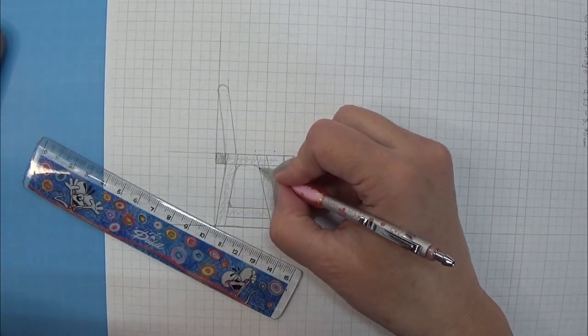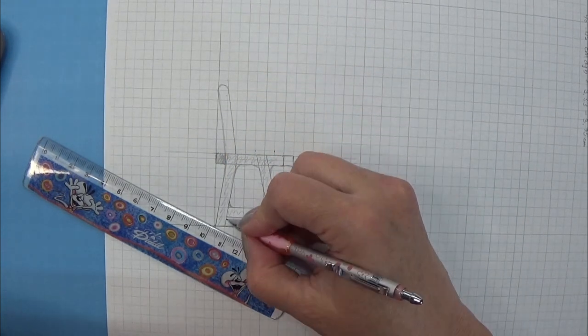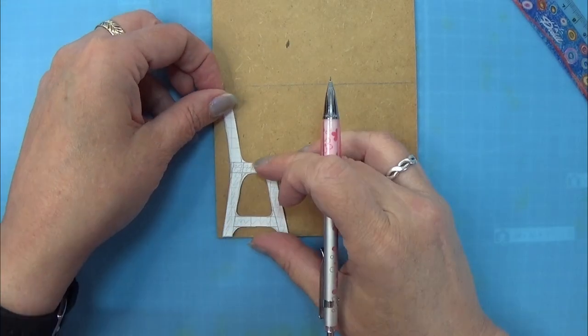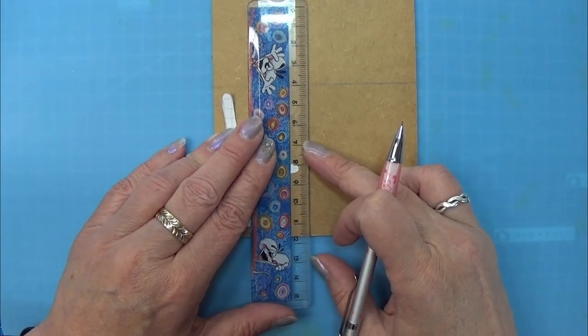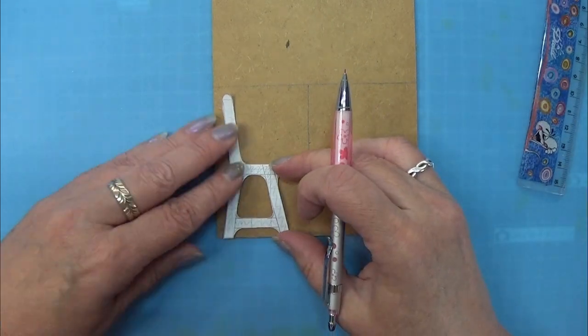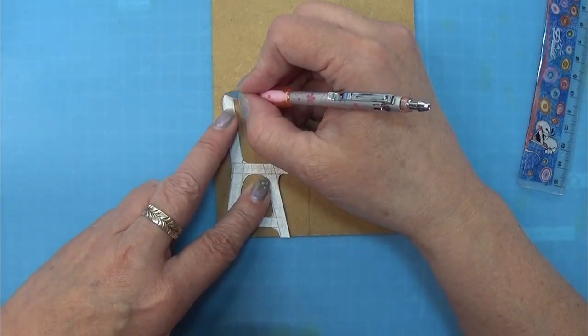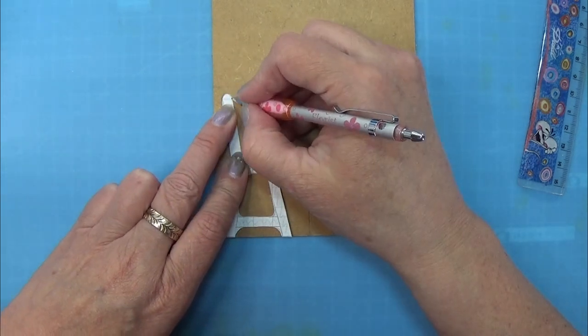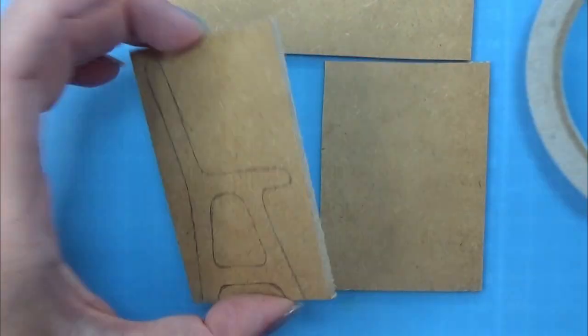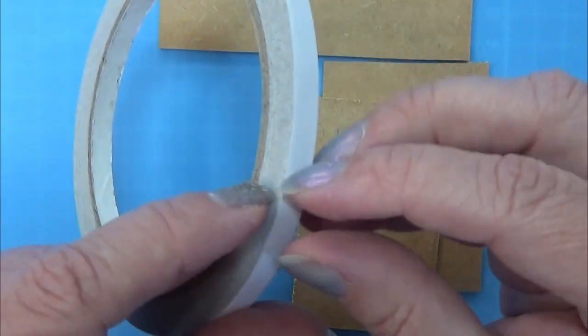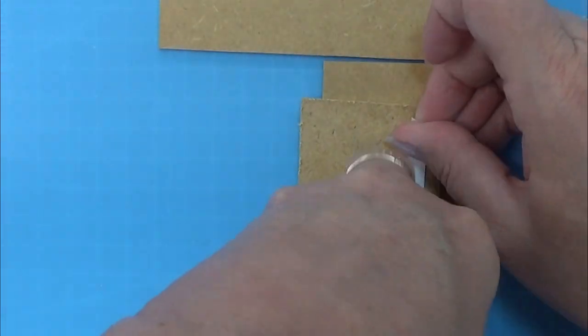Then when I am happy with the design, I am going to cut it out and then I will transfer it to a piece of wood. This is I think 1.5 millimeter thick wood, it might be two millimeters, but it really doesn't matter.